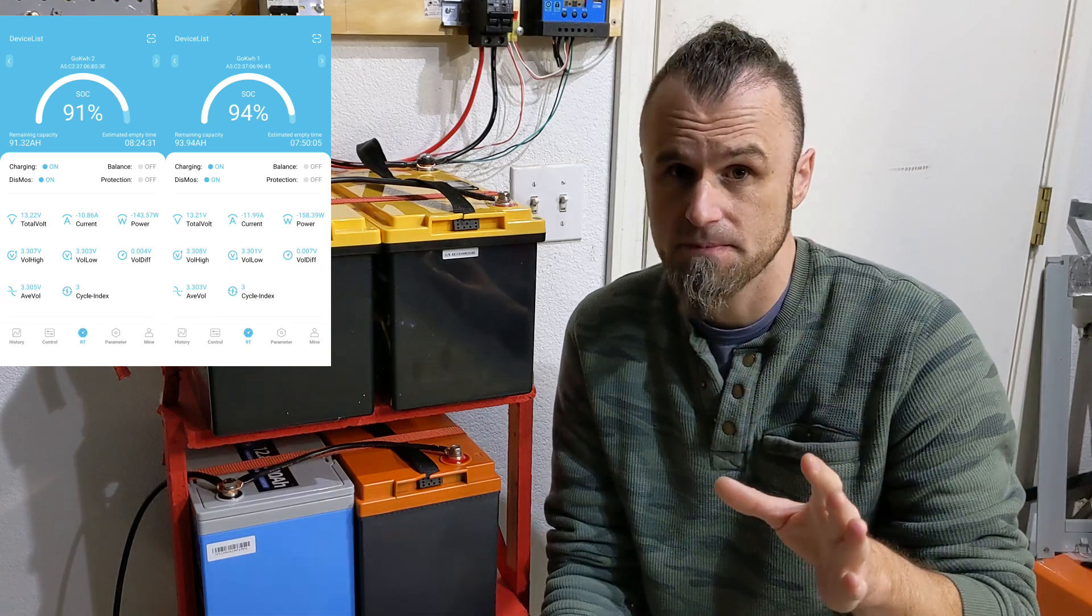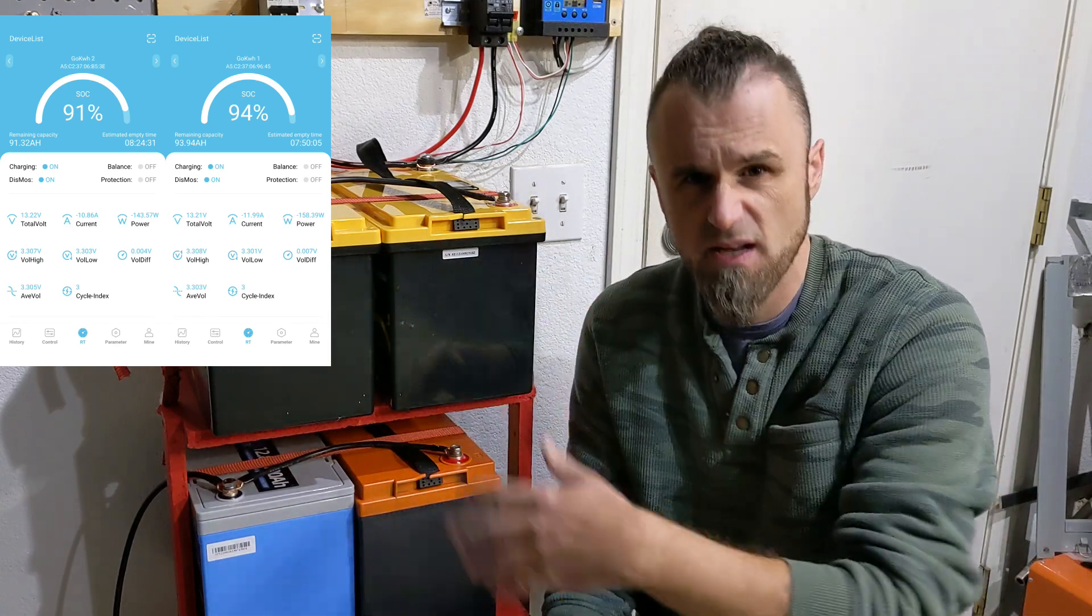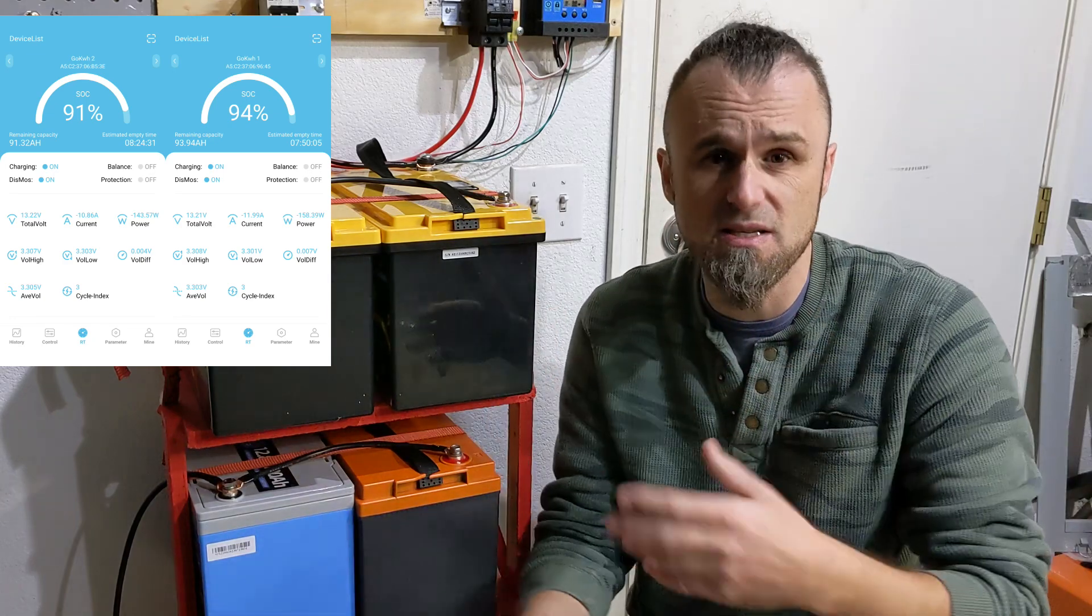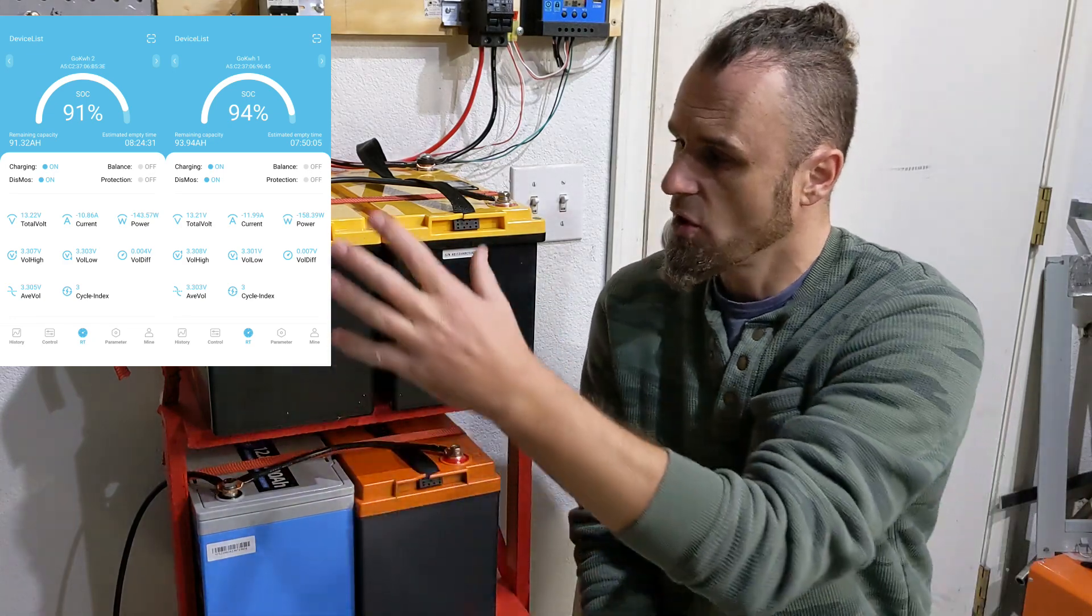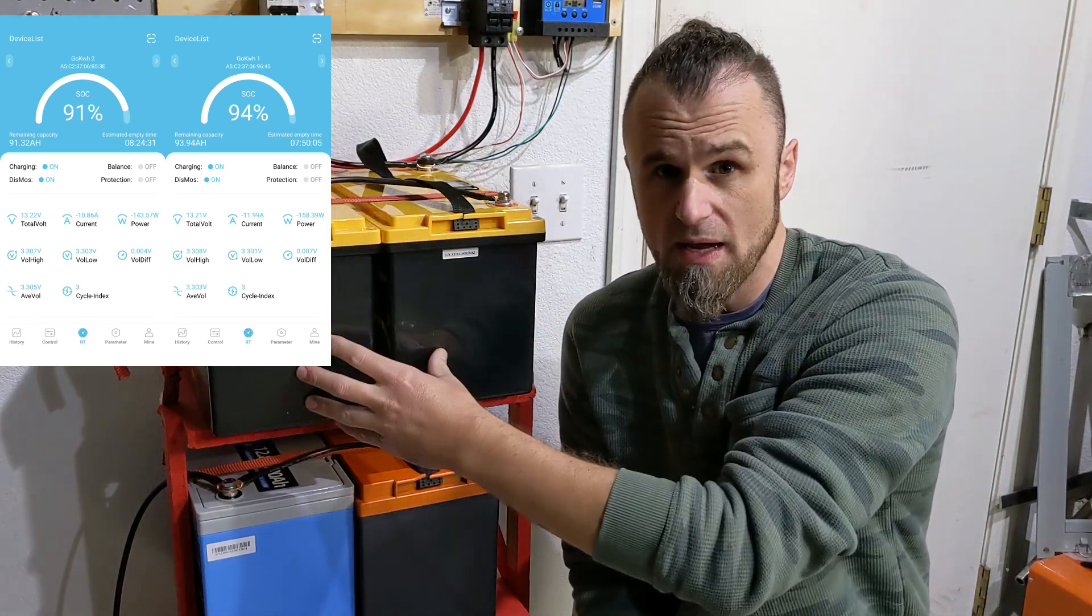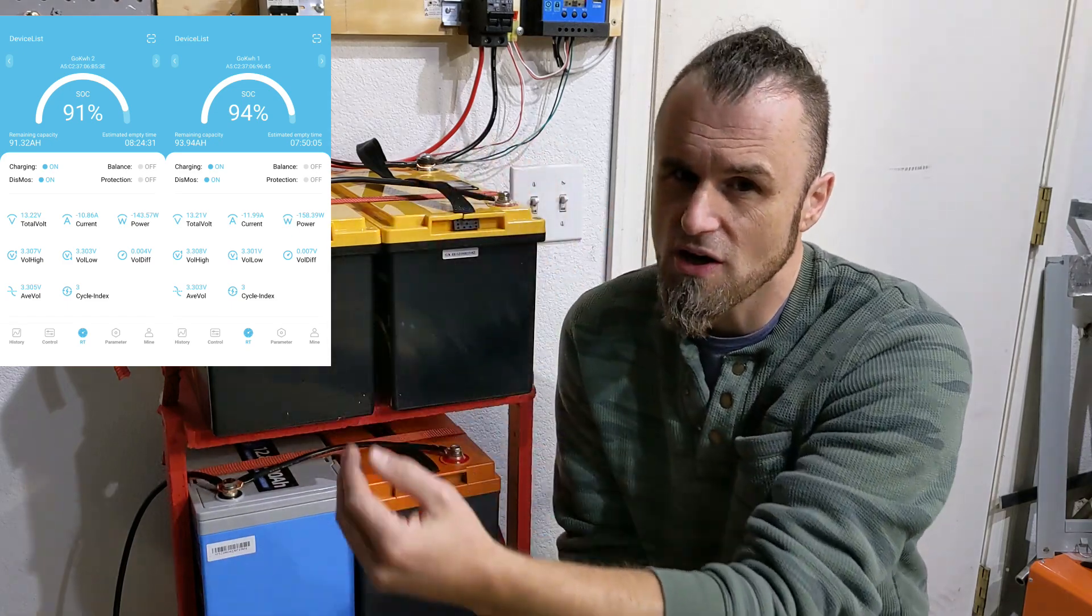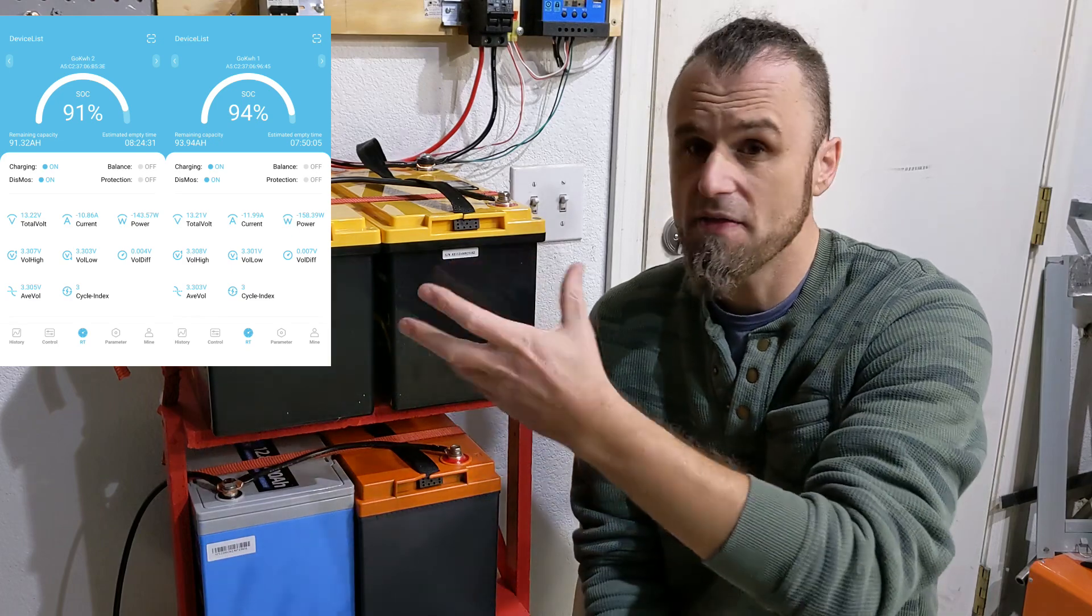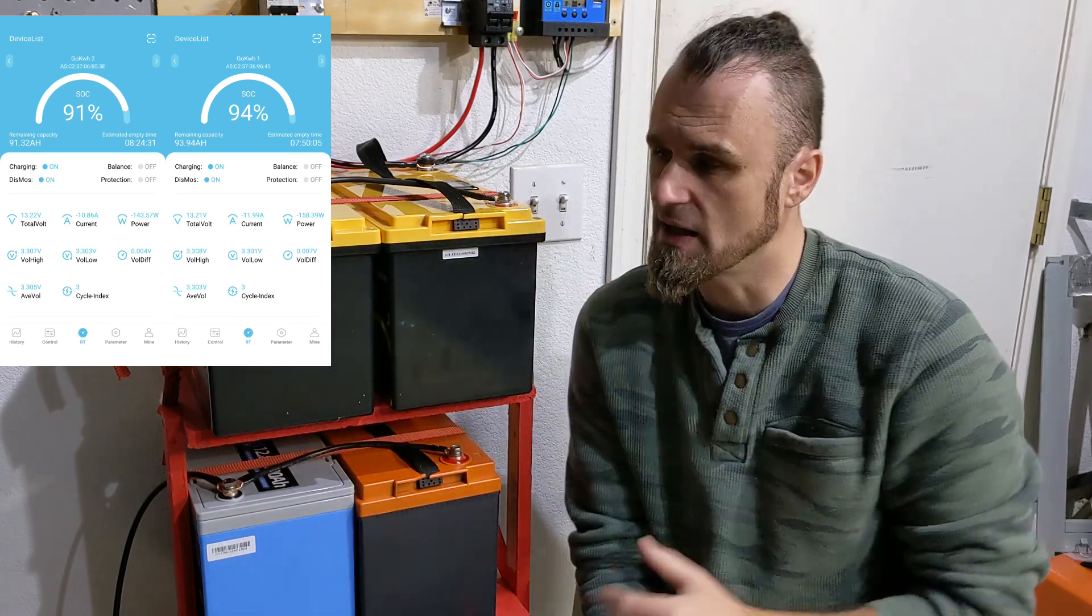About 5%, or by 5 amp hours - because it's 100 amp hours, 100%, you could switch percentages and amp hours easily to understand the math. So they start equal, I equalize them, and then one starts to discharge faster and the other one starts to discharge slower, and they build a little bit of a difference between them.